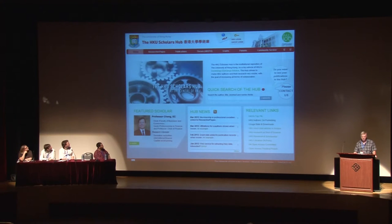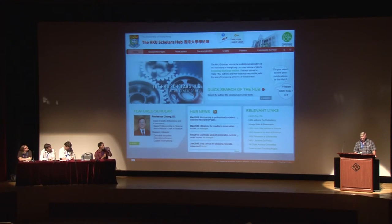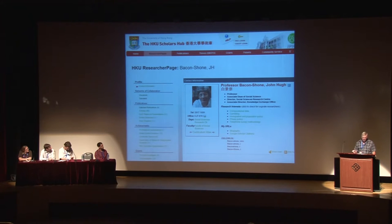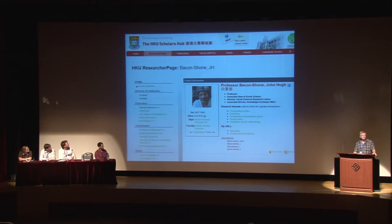That's why we built the authority control system in our institutional repository — the HKU Scholars Hub. It handles not just publications, but also projects, grants, theses, inventions, etc. An example researcher page gives the full name in Roman, the complete name in Chinese, the preferred academic publishing form, the short abbreviated form, and an 'also cited as' section listing other names we've found that we know belong to this person. From there, you can see all their research activities — publications, grants, projects, inventions, and more.